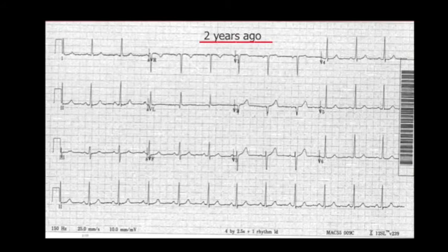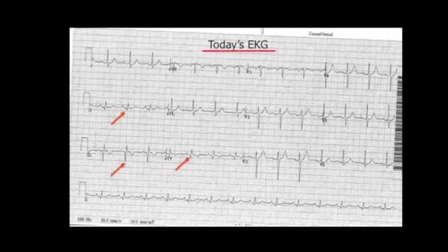The next important point about Q waves is you cannot tell when they occurred. When you see Q waves on an EKG, you know an MI has occurred at some point in the past, but you don't know if it was 2 days ago, 2 years ago, or 20 years ago — you can't tell by looking at the EKG. The only way to know when the MI occurred is to compare today's EKG to an old EKG. If the Q waves were not present on the previous EKG and they are present on today's EKG, you know the MI happened sometime between when the old EKG was taken and today.